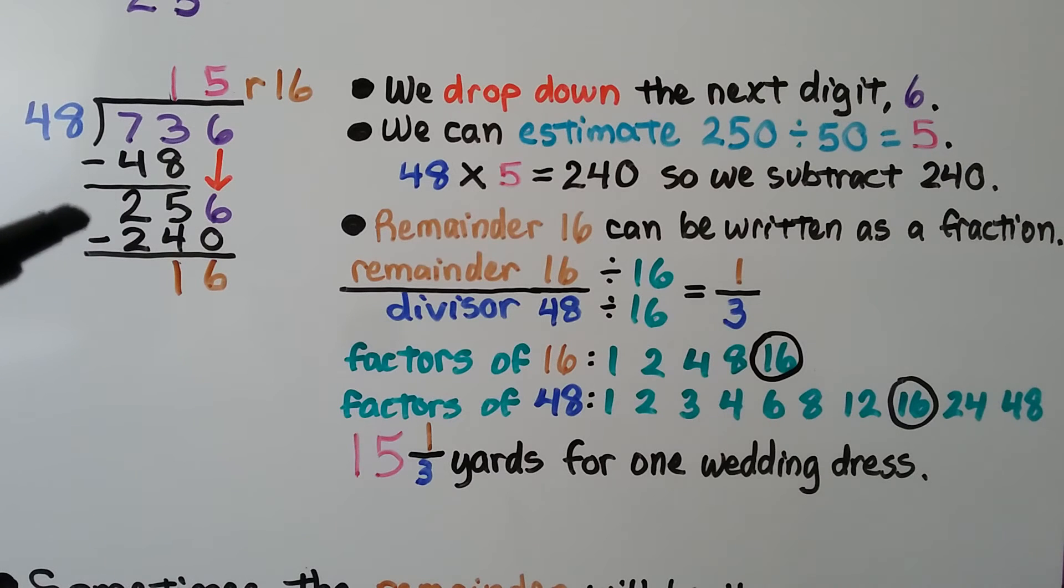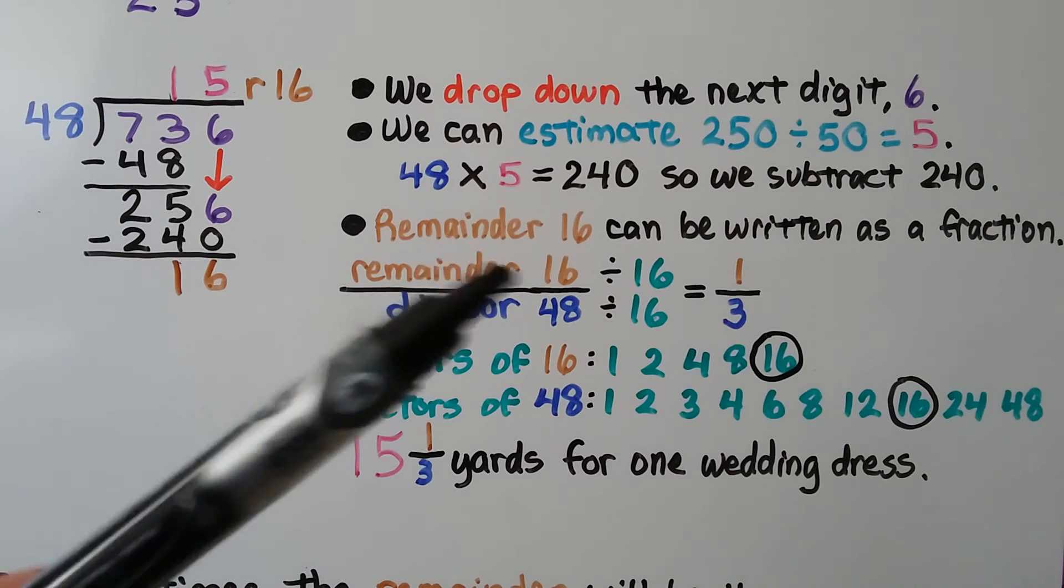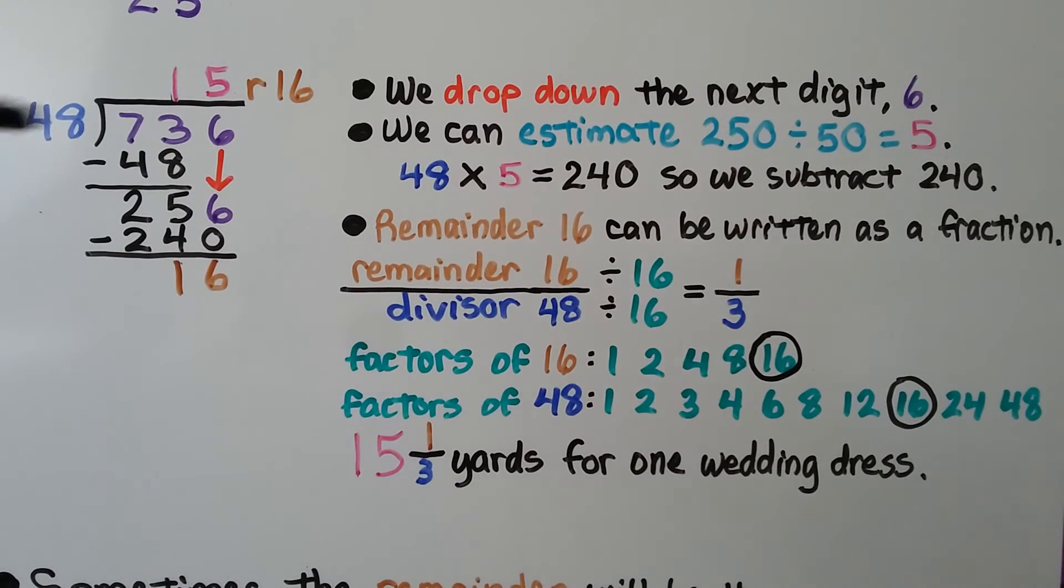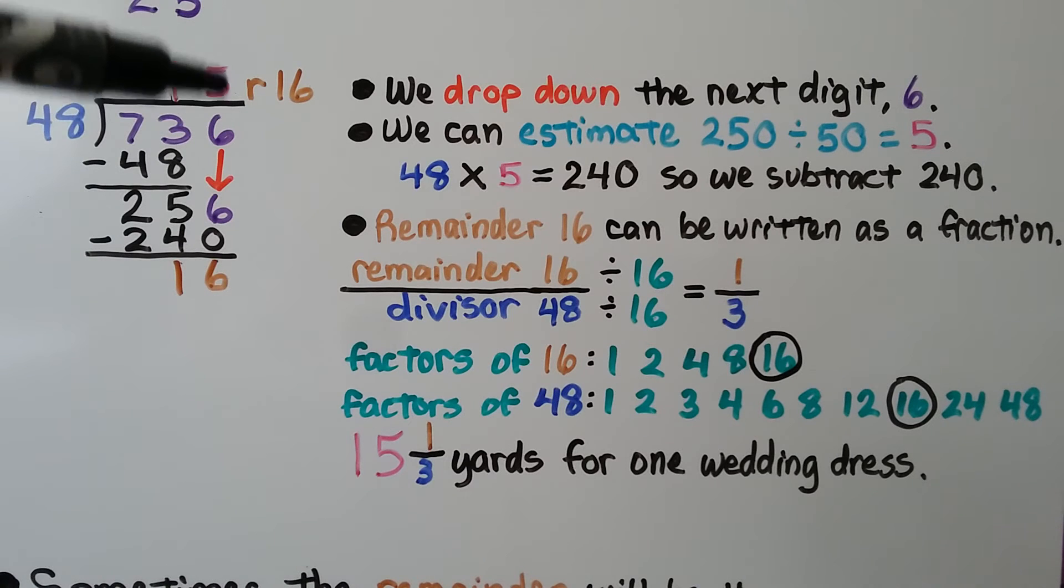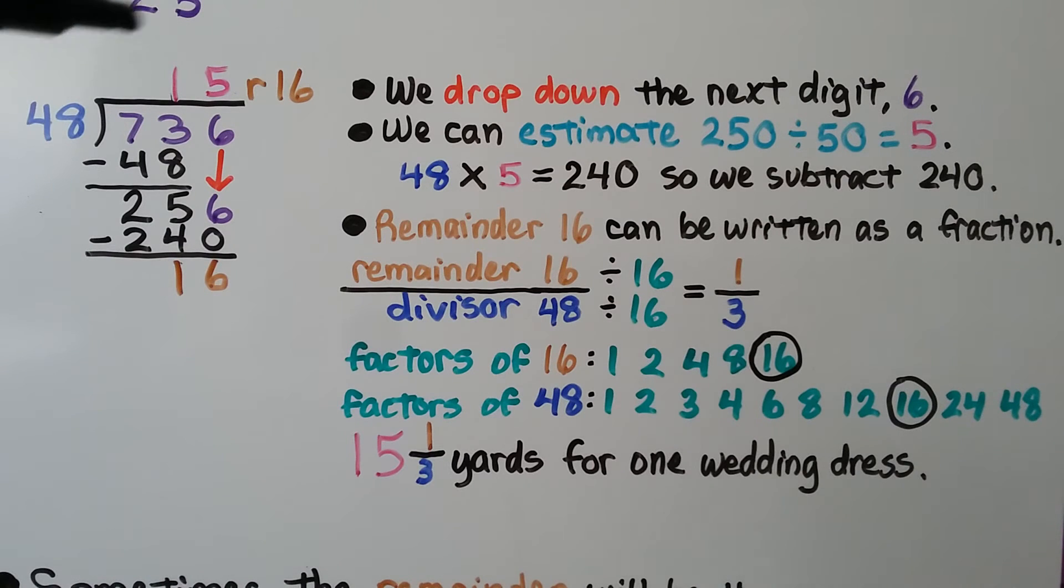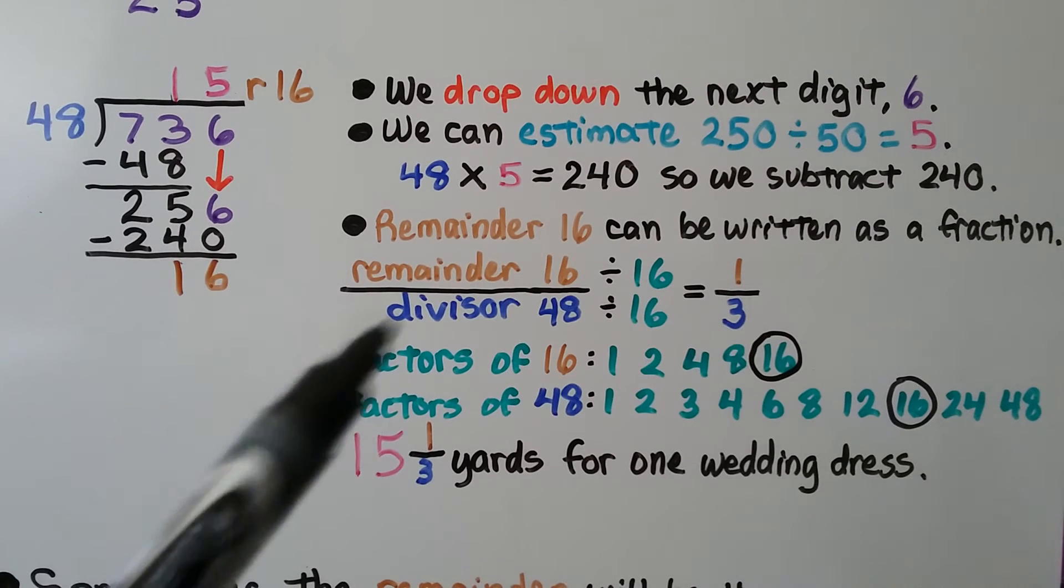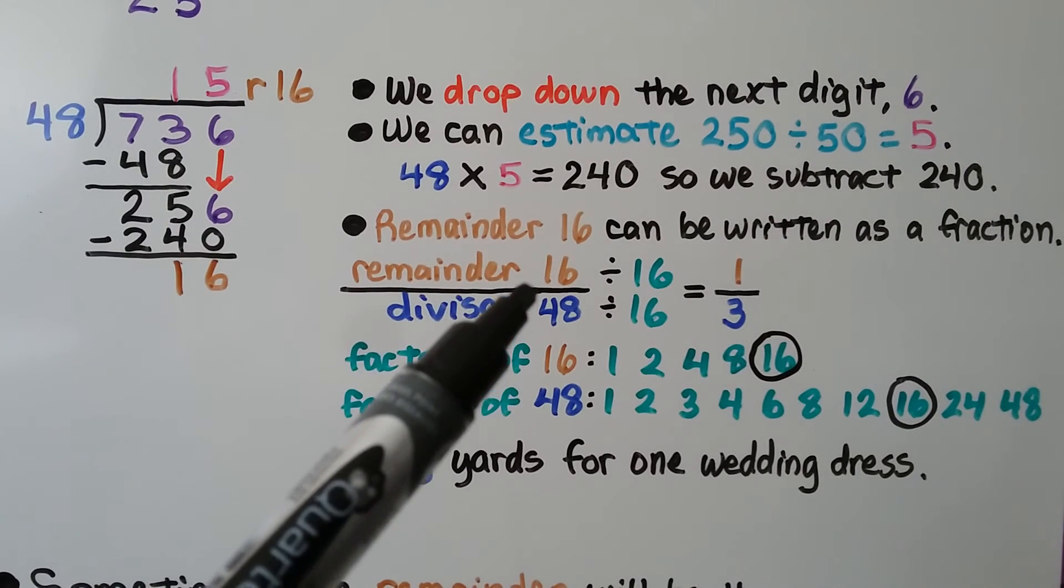We drop down the next digit, the 6. And we can estimate 256 divided by 48 as 250 divided by 50, which is 5. We write a 5 above the 1s place, above the 6 here. We do 48 times 5, which is 240, and we subtract it. We get a remainder of 16. And the remainder of 16 can be written as a fraction. We put the remainder over the divisor. We have 16 48ths.